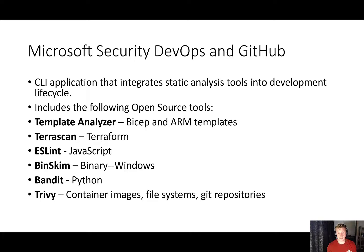Defender for DevOps has a tool called Microsoft Security DevOps and this is a command line application that integrates static analysis tools into your development lifecycle. You can configure this tool within your GitHub Actions workflow to take advantage of open source tools to scan your code for misconfigurations and security vulnerabilities. These include the template analyzer which scans BICEP and ARM templates, and TerraScan which can scan your Terraform code. In this video we'll be focusing purely on BICEP code.